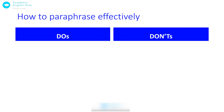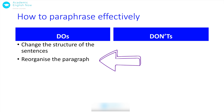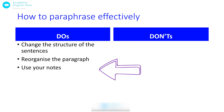First, some do's and don'ts for paraphrasing effectively. You should definitely change the structure of the sentences — it's not enough to change a couple of words here and there; you've got to rewrite the text completely. You also want to reorganize the paragraph if you're taking an entire paragraph from a text. The best thing to do is use your notes: when reading the literature, take notes and then, when writing, look at your notes rather than the text itself.